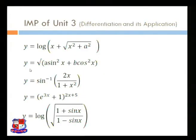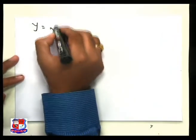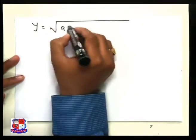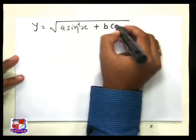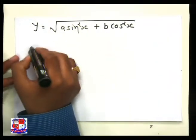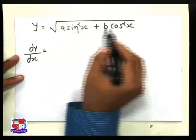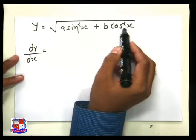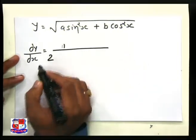The next question is y equal to √(a·sin²x + b·cos²x). We write y equal to √(a·sin²x + b·cos²x) and want to find dy/dx. Assuming the whole inner term as x, the differentiation of √x is 1 upon 2√x. So dy/dx equals 1 upon 2√(a·sin²x + b·cos²x) multiplied by the differentiation of the inside.